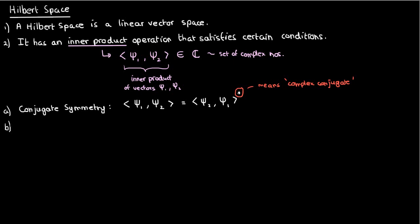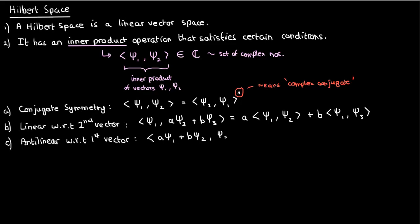The other property is linearity with respect to the second vector. So if I'm taking the inner product between psi 1 and a second vector that includes the scalars a and b, a and b come out unchanged in the resulting inner product. However, if the scalars a and b appear in the first vector we have to take the complex conjugates of those scalars when we pull them out of the inner product.